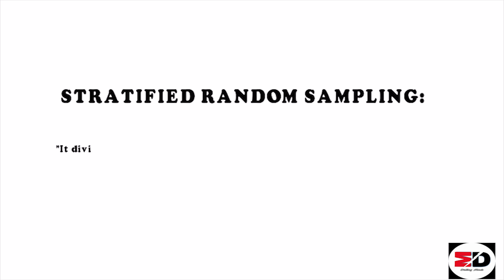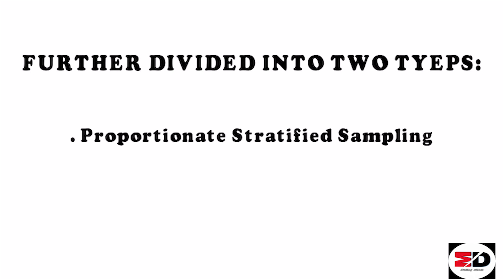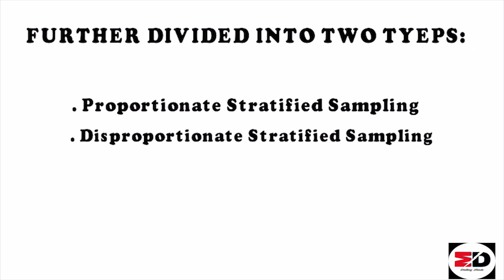Stratified random sampling divides the population into smaller homogeneous groups called strata, and then takes a random sample from each stratum. In this technique, we divide the population based on gender, age, educational status, or any characteristics relevant to your research, and name those groups 'strata'. Then samples are randomly selected from each group. Stratified sampling has two subtypes: proportionate stratified sampling and disproportionate stratified sampling.